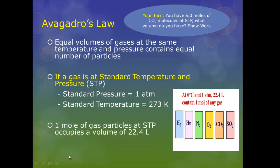Your turn. Think about this. You have five moles of CO2 molecules, carbon dioxide molecules, at standard temperature and pressure. That's STP. What volume do you have? Show your work. So pause it. Jot down what you think, show us your mathematics to figure that out. Bring it to class and share your answer with your teacher.